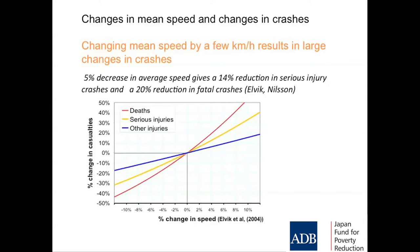The red line shows the impact of changes in mean speed on fatalities anywhere in the world: if mean speeds on a road went up by 2%, fatalities on that road would go up by 10%. A little bit of speed — a big impact on fatal outcomes. That's a rather sobering reality, not widely understood and not widely promoted. And as Runa Elvik has said: a 5% decrease in average speed will give you a 14% reduction in serious injuries and a 20% reduction in fatal crashes.